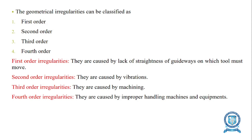Geometrical irregularities can be classified into four different orders. First order arises from lack of straightness in the guideways of the material. Second order arises when there are too many vibrations in the surface or environment. Third order irregularities arise during machining, when some deviations are created in the workpiece. Fourth order irregularities are caused by improper handling of machines and equipment.